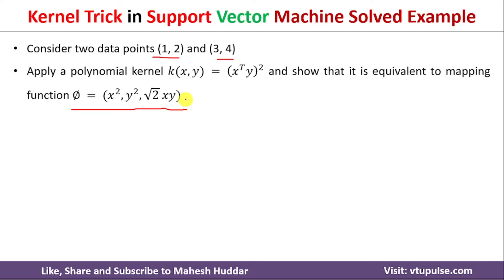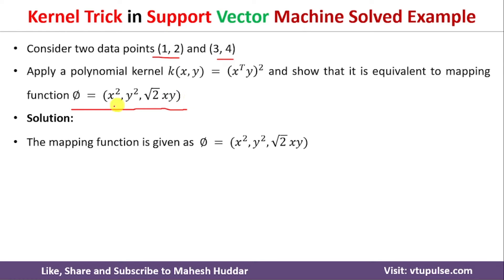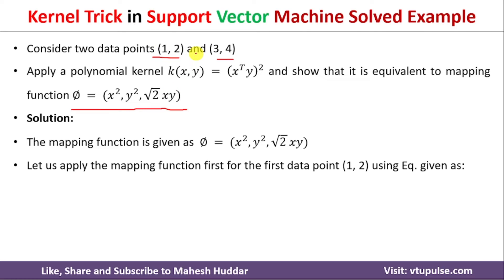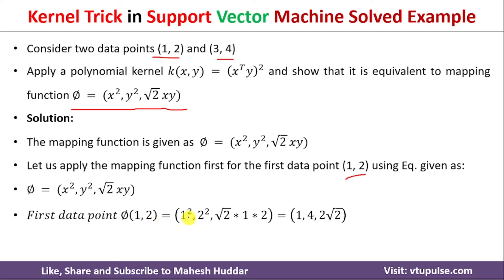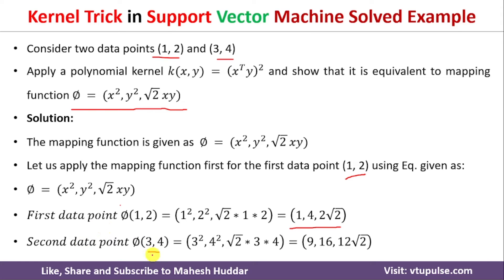This is a quadratic mapping function. We apply the mapping function to both data points. For φ(1, 2): substituting x=1, y=2 gives (1², 2², √2·1·2) = (1, 4, 2√2). For φ(3, 4): substituting x=3, y=4 gives (3², 4², √2·3·4) = (9, 16, 12√2).